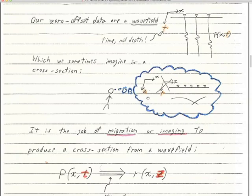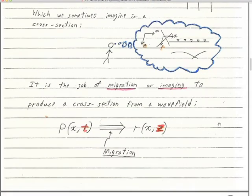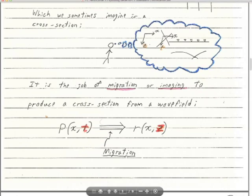Because her structures are not dipping very much — if they're dipping more than five degrees, especially 15 degrees, that's where we need migration. That's where we need imaging to produce a cross section from the wave field. Migration is also converting the wave field — the pressure wave field P(x,t) — to a reflectivity cross section R(x,z). The process that does that conversion from time section to depth section, we call migration.